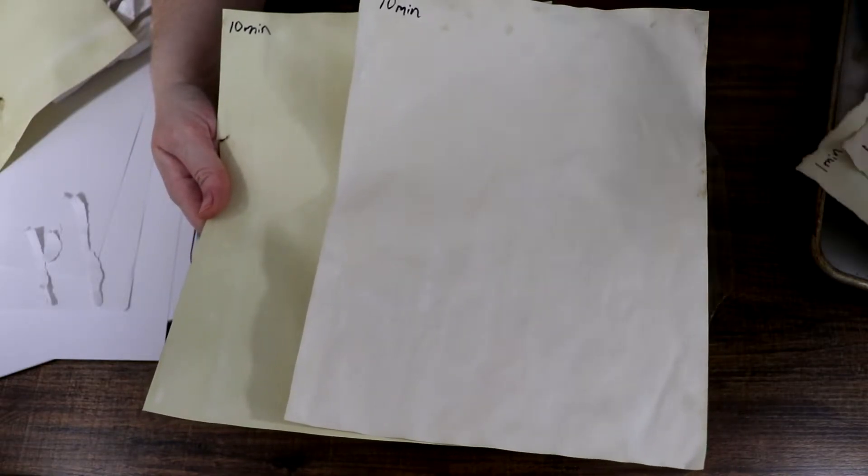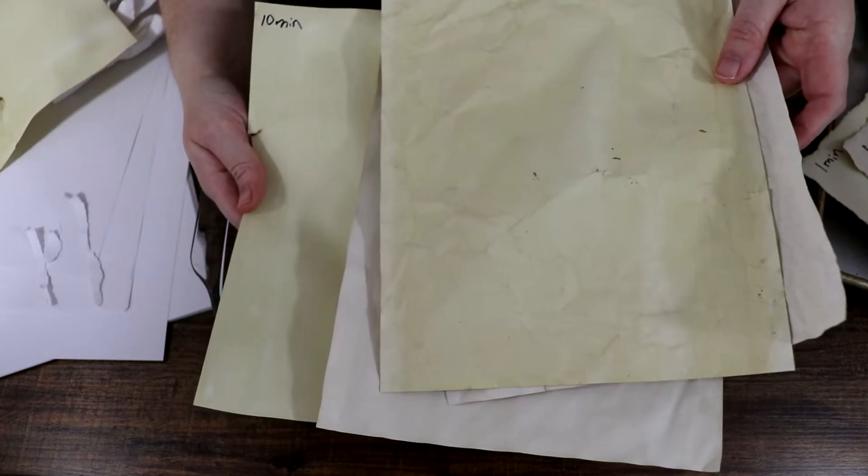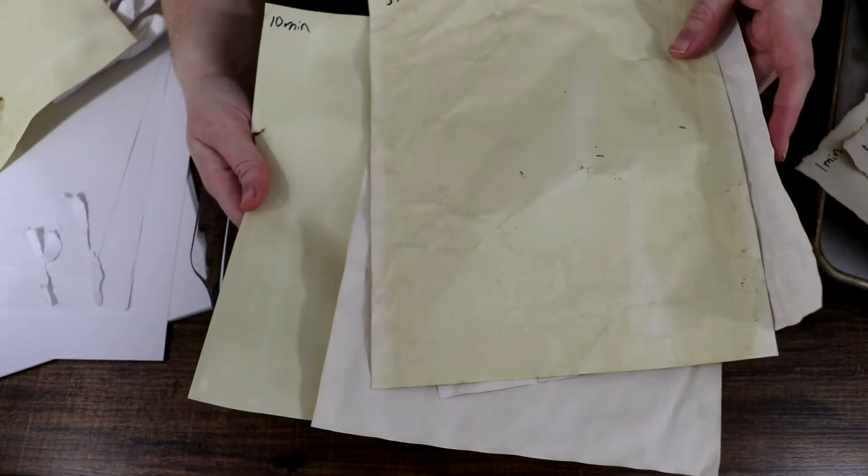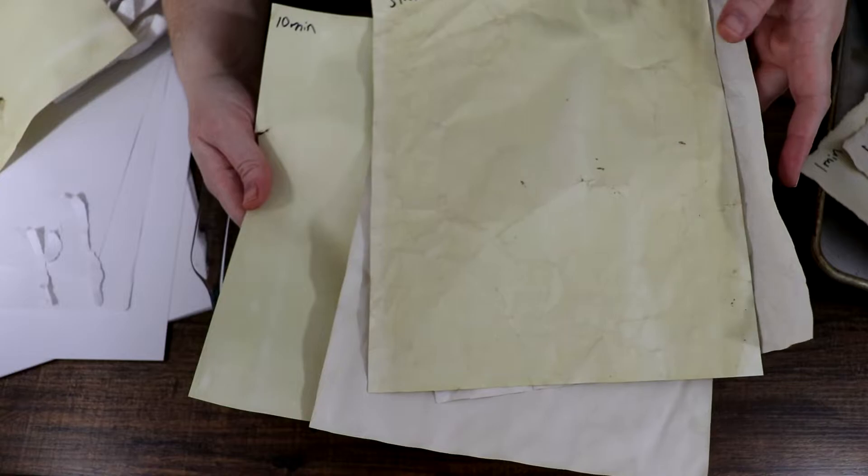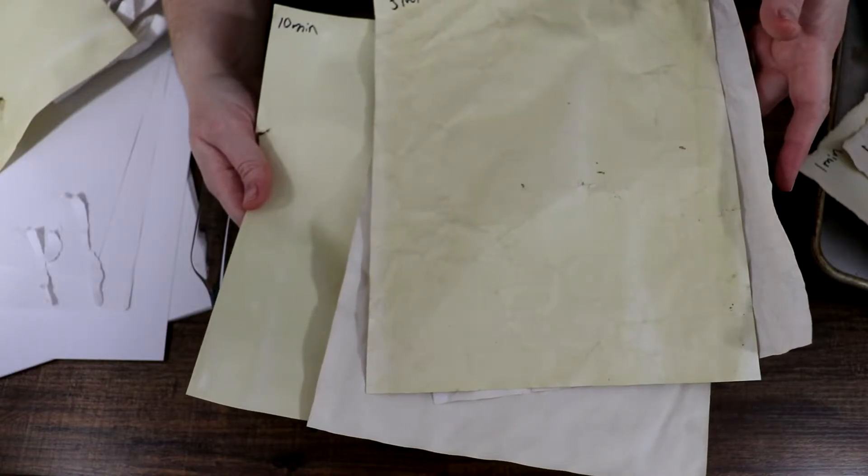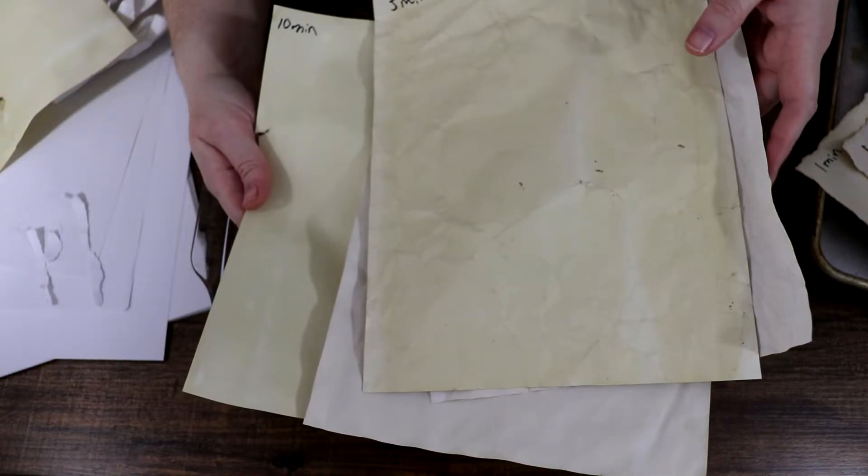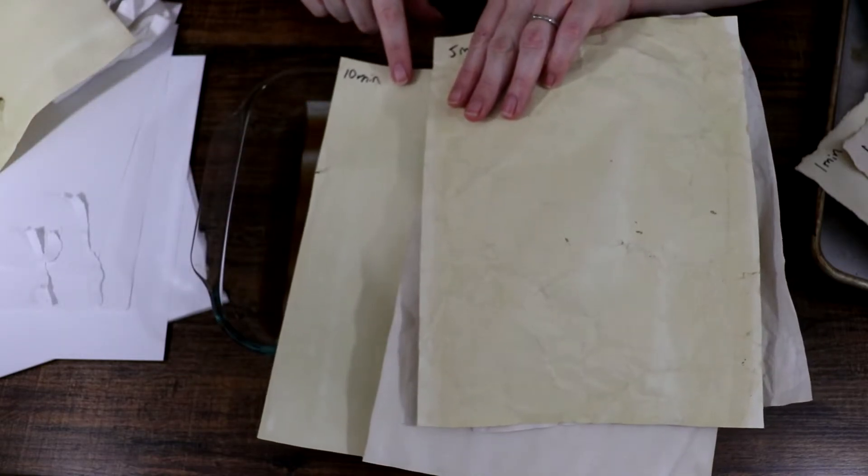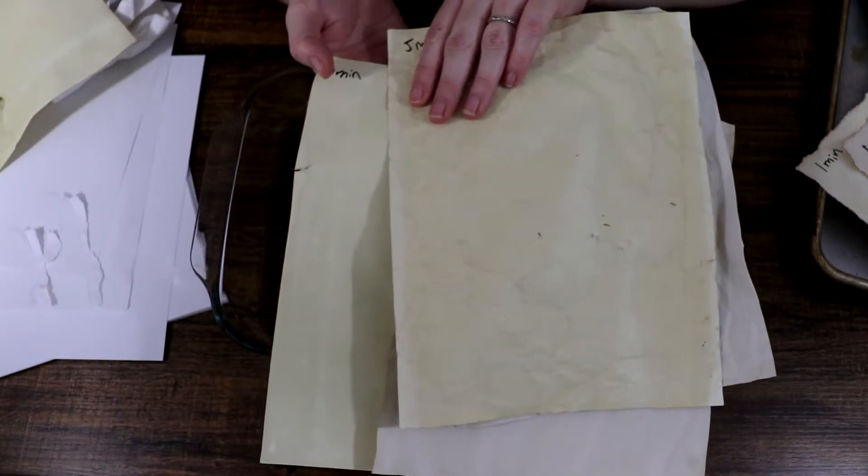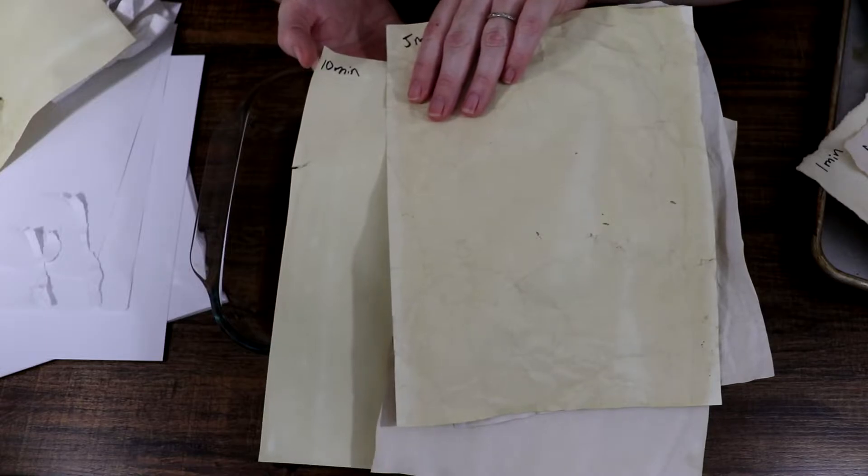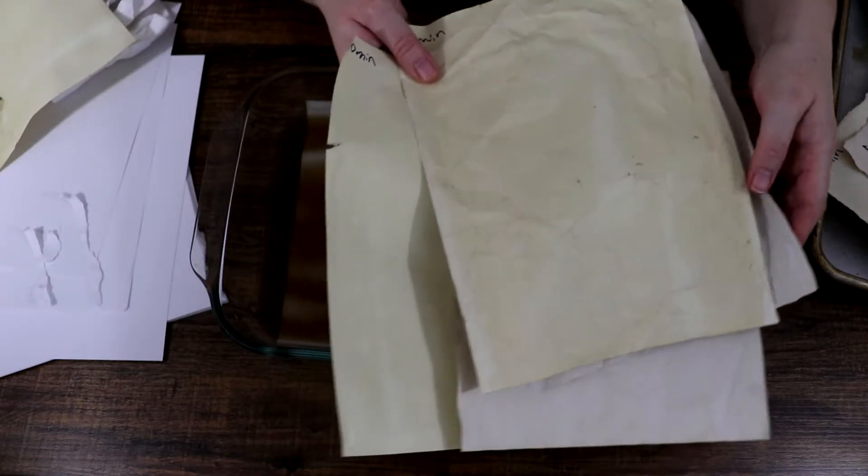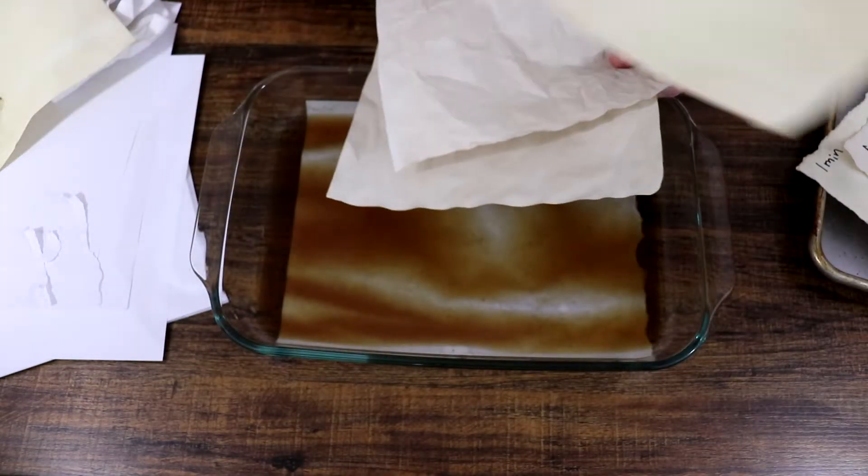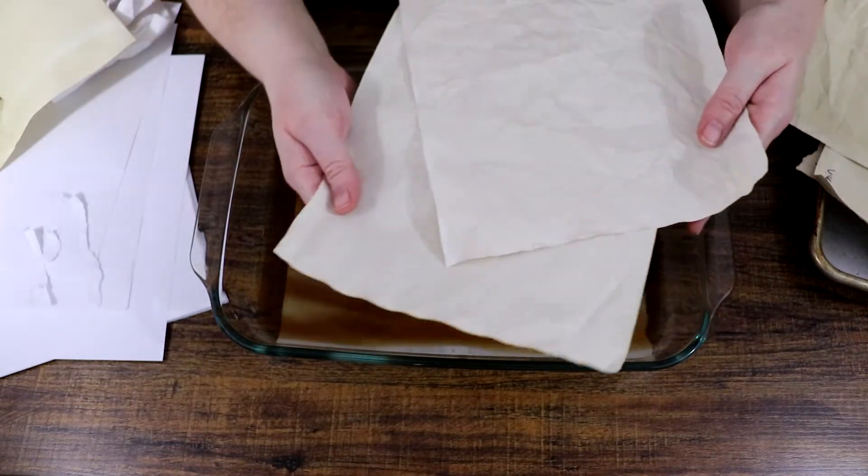So the next interval I did was 10 minutes. Thicker paper on this side, computer paper on this side. So honestly there's not very much of a difference, at least that I can see, between five minutes and 10 minutes. So I mean this is thick paper at 10 minutes, this is thick paper at five minutes, and it kind of has the same color. Same thing with the computer paper.